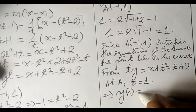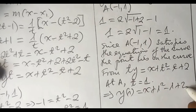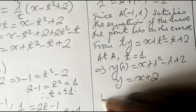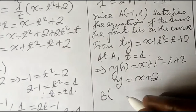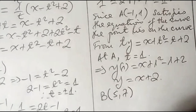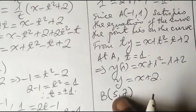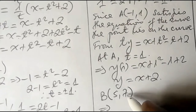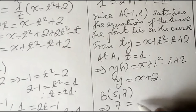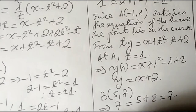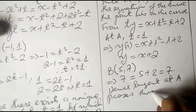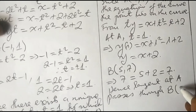Substituting t equals 1: 1 times y equals x plus 1 squared minus 1 plus 2, giving y equals x plus 2. To prove this tangent passes through B(5, 7), we substitute: when x is 5, y should be 7. Indeed, 7 equals 5 plus 2, which equals 7. Hence the tangent at A passes through point B with coordinates 5, 7.